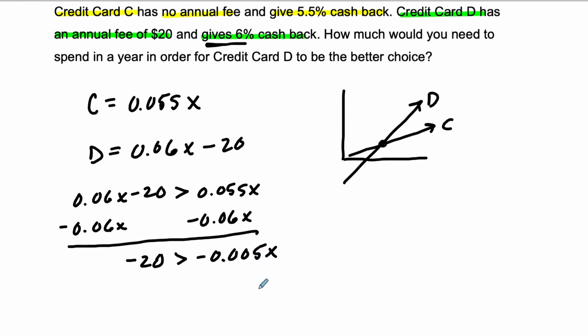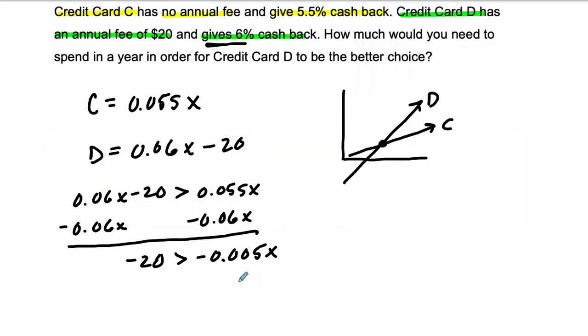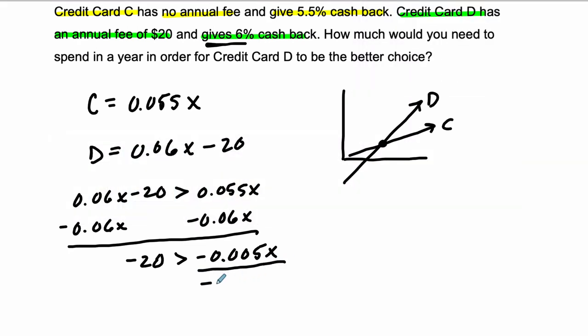And then I'm going to divide by negative 0.005 on both sides. Now with an inequality, whenever you divide or multiply both sides by a negative, I reverse the direction of the inequality.